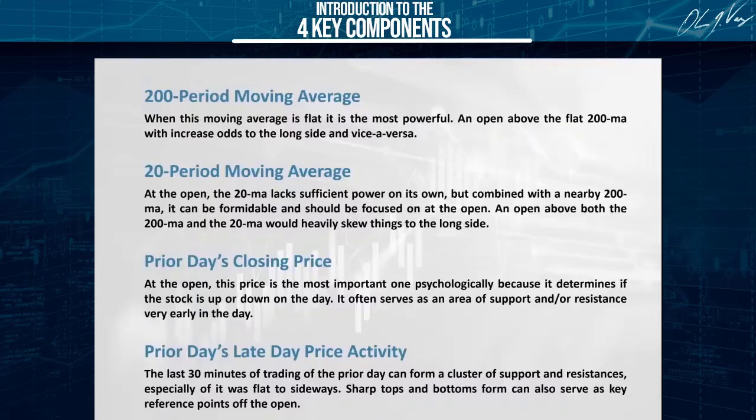Item number one: whatever you're trading, we need a 200-period moving average. That's item number one — a 200-period simple moving average.